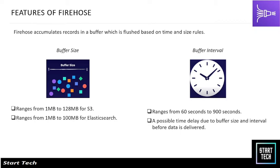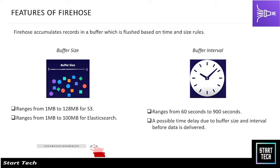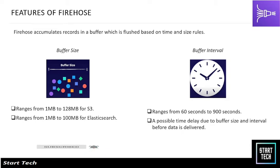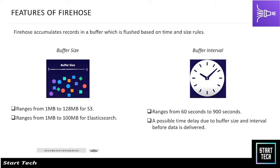Data is sent to the destination when either the buffer size or buffer interval threshold is reached. For S3, buffer size ranges from 1 MB to 128 MB; for Elasticsearch it is 1 MB to 100 MB. Buffer interval can be 60 to 900 seconds. A possible time delay occurs because data is only delivered to the destination when one of these two conditions is met — this is the important factor to understand about Kinesis Firehose.